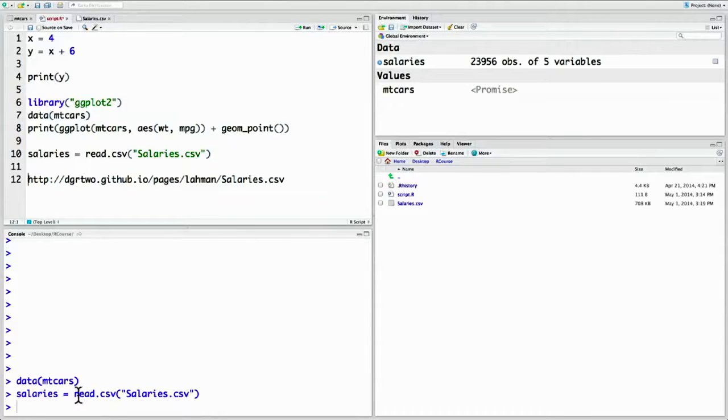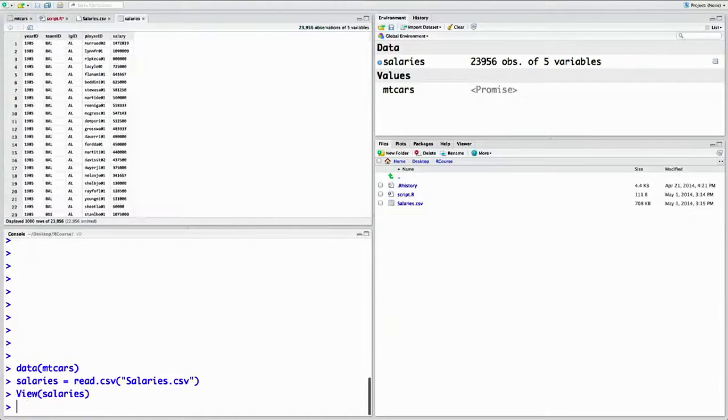So what happened is this read in the csv file as a data frame. You can tell by doing view salaries. So now this data is in R, you see that it got the column names right and has one row for each line in the file.